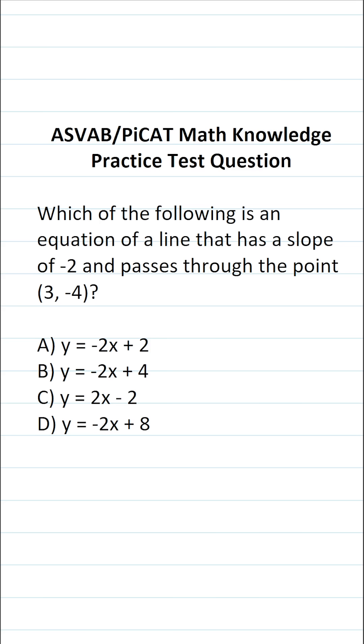So in order to write our equation of the line, we're going to use the slope-intercept form for the equation of a line, that is y equals mx plus b, where m is the slope and b is the y-intercept.